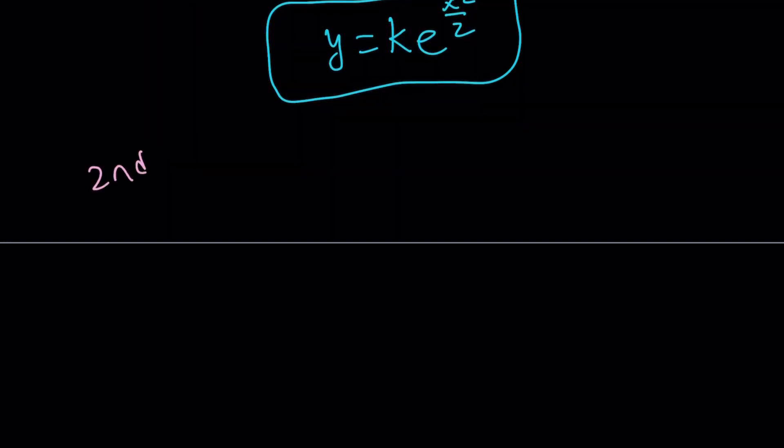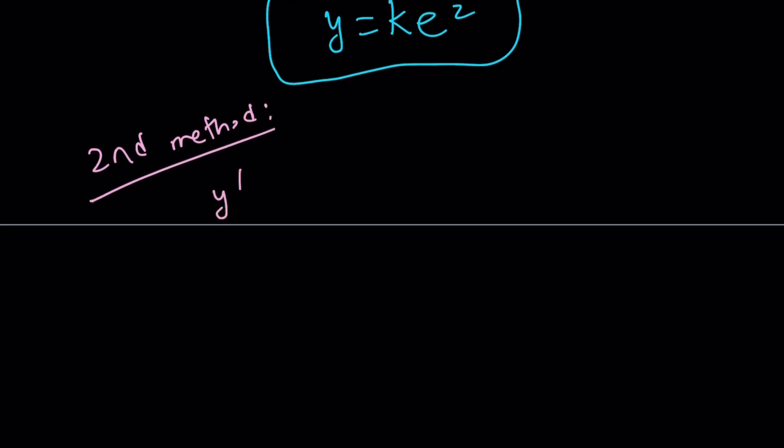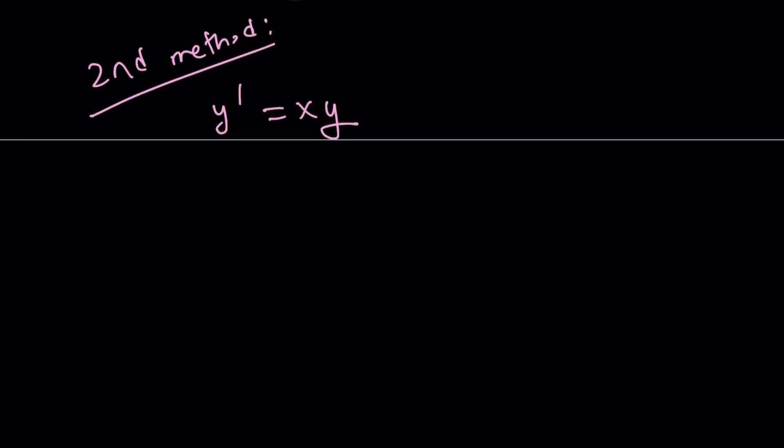Okay. Second method. The second method is basically, obviously, much simpler, right? Of course, no pain, no gain. Y prime is equal to xy. Now, I can write y prime as dy over dx equals xy. And now, this is actually a separable differential equation. So, why don't we just separate the variables, write this as dy over y equals x dx.